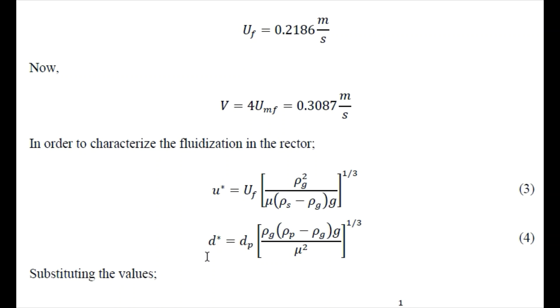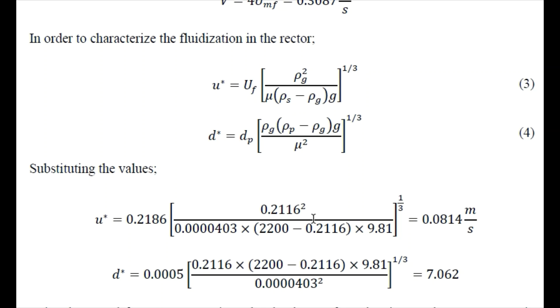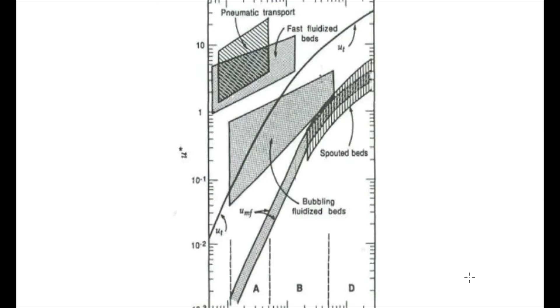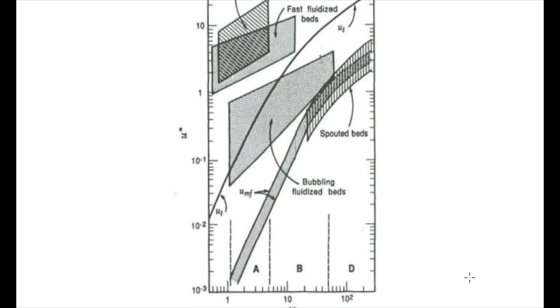Now we need to find these two parameters to characterize whether the reactor is operating under the fluidization region or not. We need to substitute these values like uf we just determined and the other parameters we just have. Substituting these values we obtain u steric as 0.0817 meter per second and d steric as 7.062. Then we just need to go to this figure to find out the region where the reactor is operating.